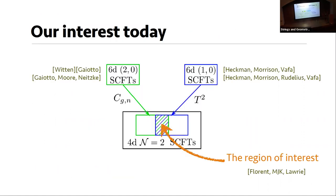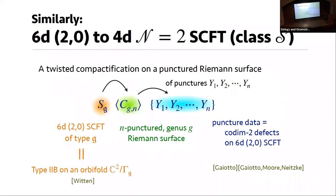I'll now tell you which type of 4D N=2 CFTs I'm going to utilize today. I'm going to use both geometric engineering perspectives. One is from the 6D (2,0) compactification of type G, which gives rise to the so-called class S theories. The notation is: G is the type of 6D (2,0) SCFT, the genus g and number of punctures n define the Riemann surface, and the puncture data spans codimension-two defects of the 6D (2,0) SCFT — this is the class S theory perspective giving the 4D theory.